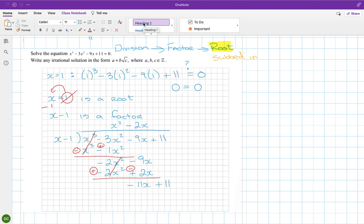And that gives me minus 11x plus 11. And I divide it again, so x into minus 11x is minus 11. Multiply that, you get minus 11x plus 11. Change the signs, plus, minus, so we're done.